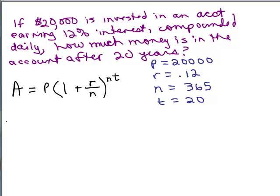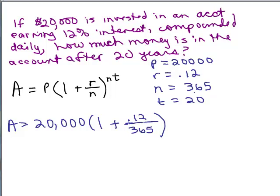So the only thing different from the previous problem is that N is 365 as opposed to 1. So we're going to plug those numbers in. A equals 20,000 times (1 plus 0.12/365) raised to the (365 times 20).